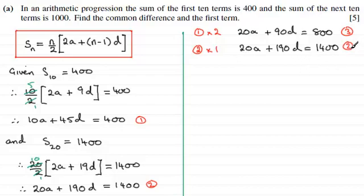So I'm going to do equation 2, because it's got bigger numbers in, take away equation 3. So if we do equation 2, take away equation 3, what do we get? Well, the A's get eliminated. 20A minus 20A is 0A. Then we've got 190D minus 90D, so that's going to give me 100D. And that's going to equal 1400 take away 800, which is 600. And if I divide both sides by 100, we now get that D equals 600 divided by 100, which is 6.